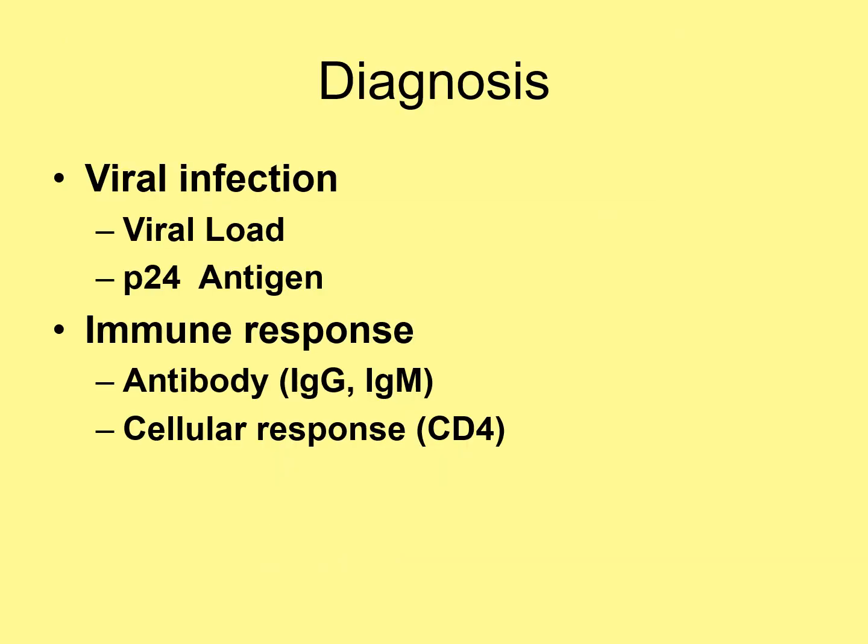Diagnosis would basically depend on viral infection and immune response. Over a period of time, HIV infects and kills white blood cells called CD4 lymphocytes, or T cells, leaving the body unable to fight off certain kinds of infections. Both T and B cells are types of white blood cells called lymphocytes.